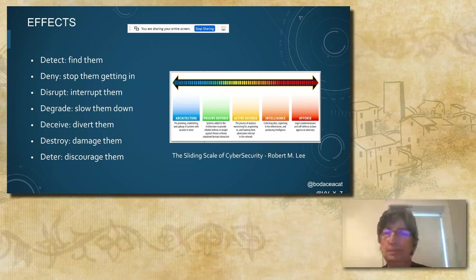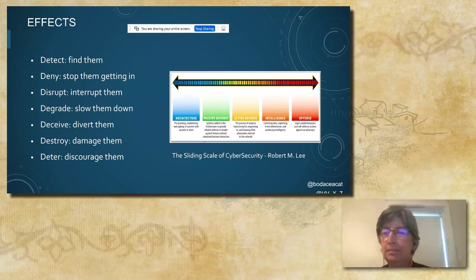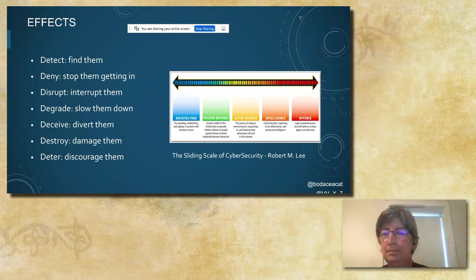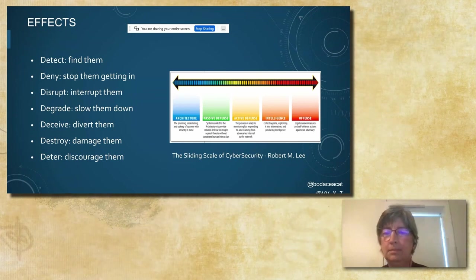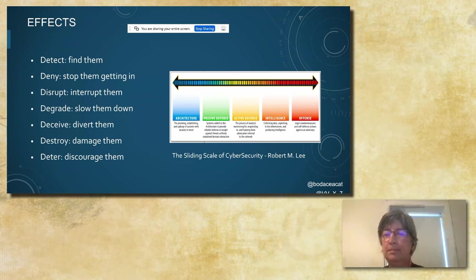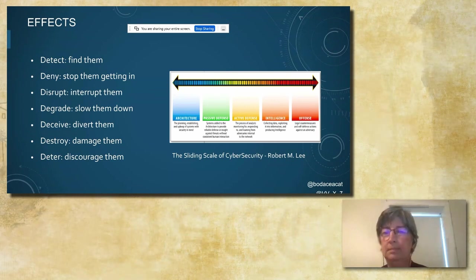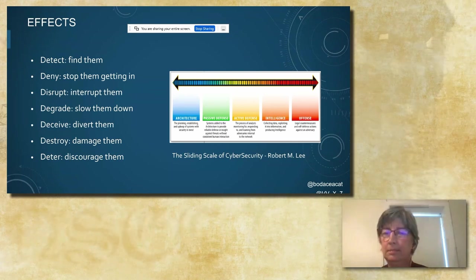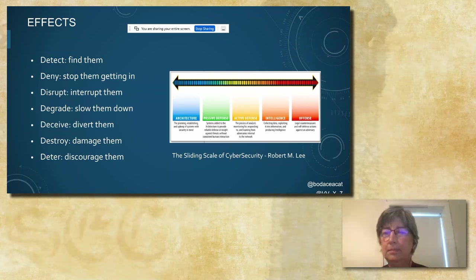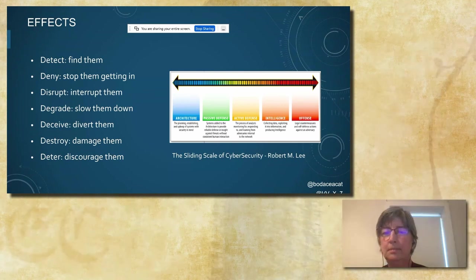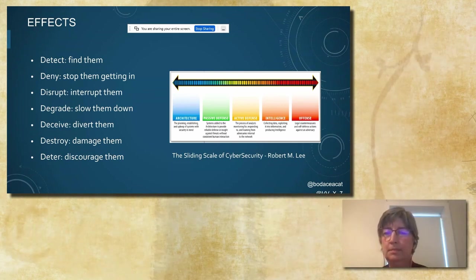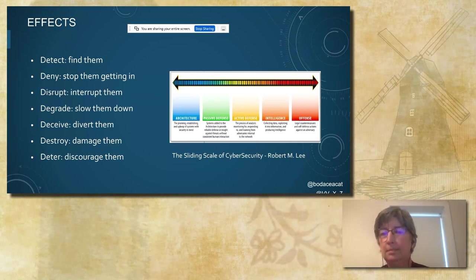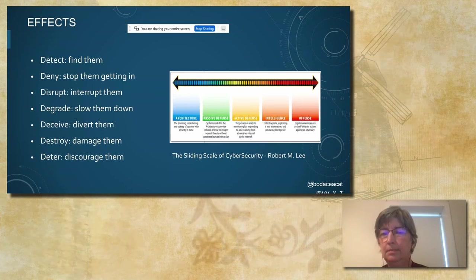Disinformation countermeasures span the full range of these effects. There's a second axis we also need to consider, shown here as the sliding scale of cybersecurity by Rob Lee. On the left of the scale, we have planning and maintenance of systems — architectural considerations for things like educational media literacy or public policy on information operations. On the other end of the spectrum, we have the offensive capabilities, which includes legal countermeasures, bot takedowns, or whatever. That distinction is important because not all actors are permitted to respond in the same way or have the needed resources to form appropriate mitigations. And not all countermeasures are intended to be reactive — you can't go and educate a population after things have already collapsed.